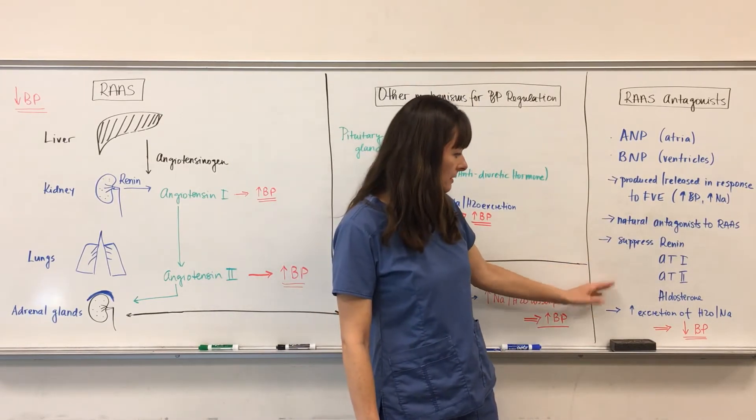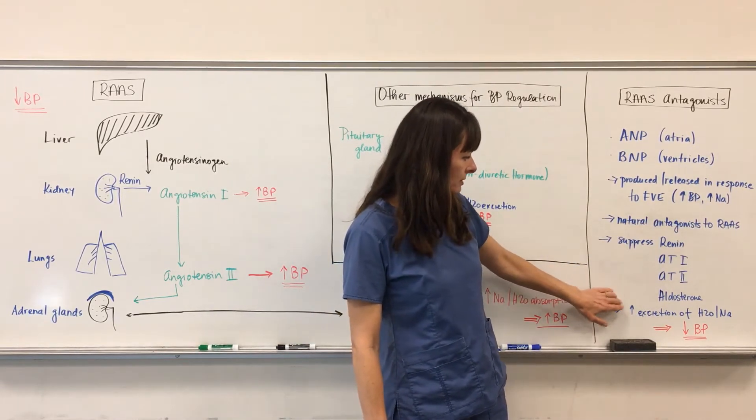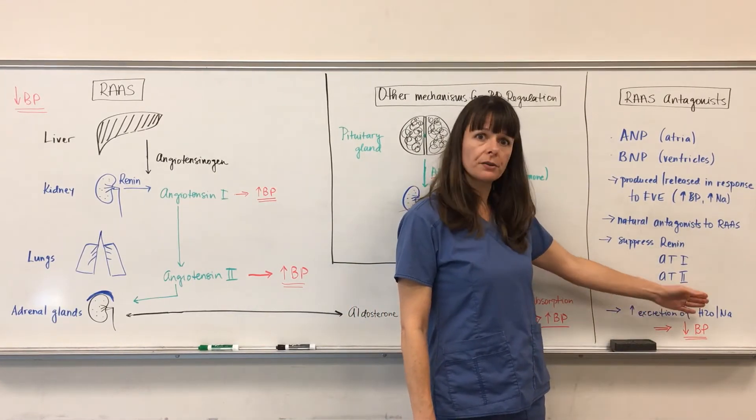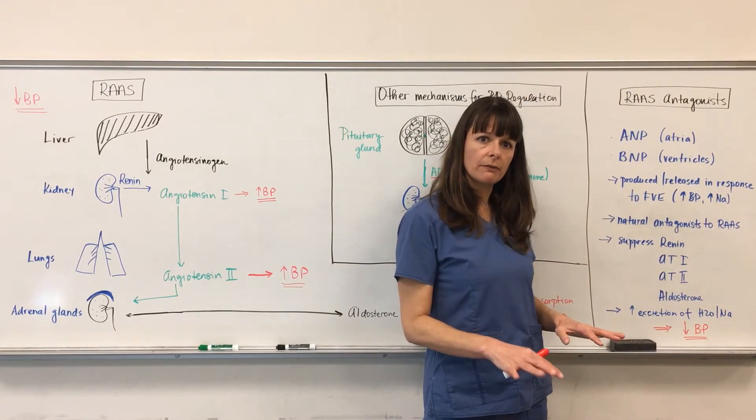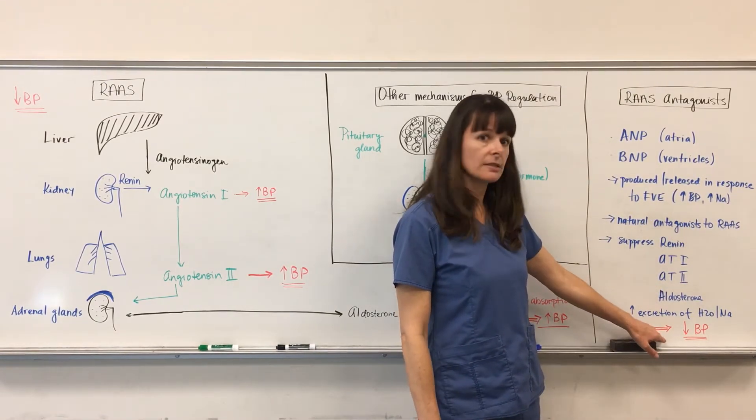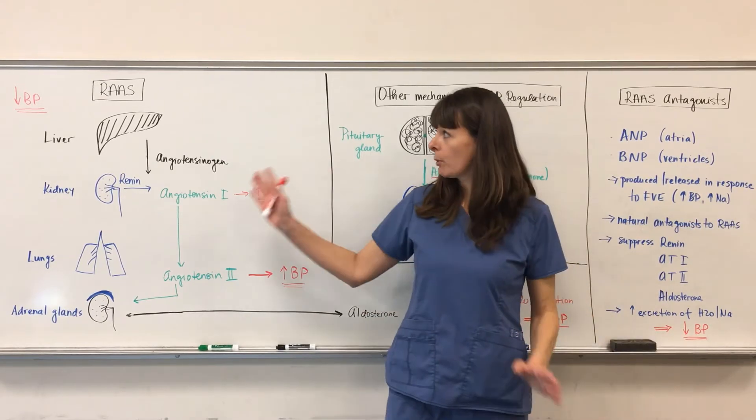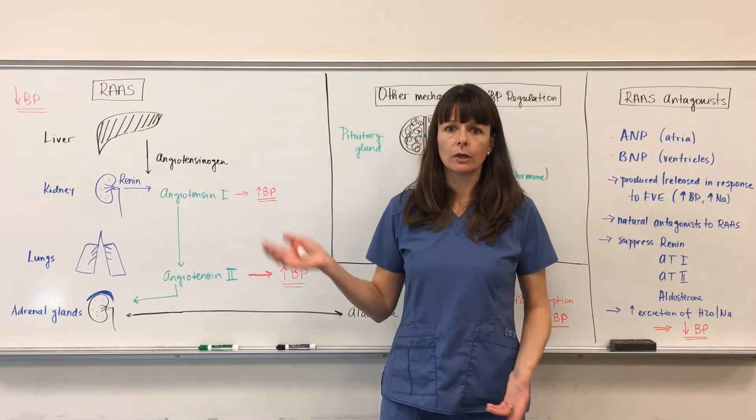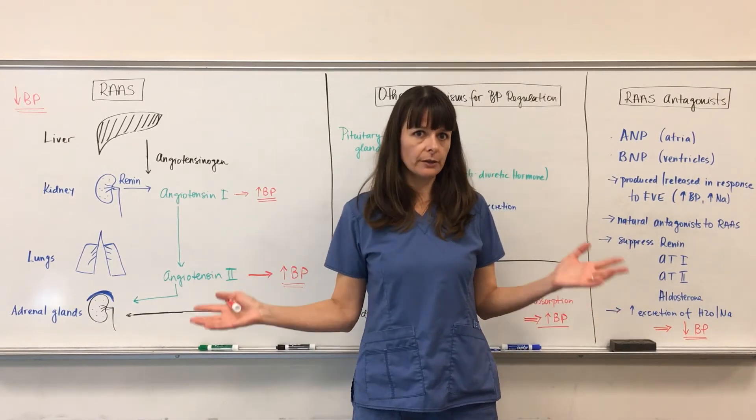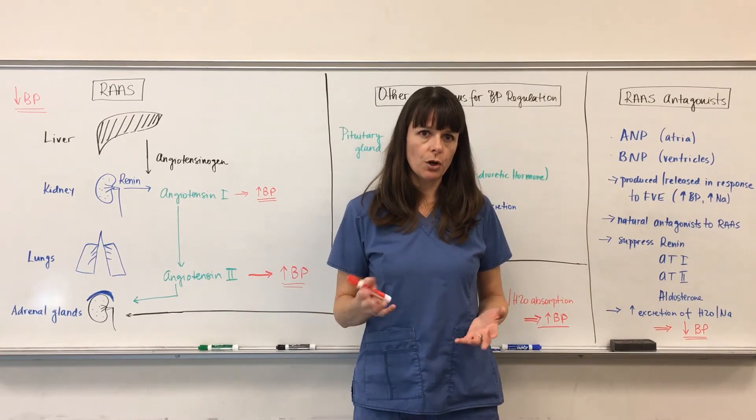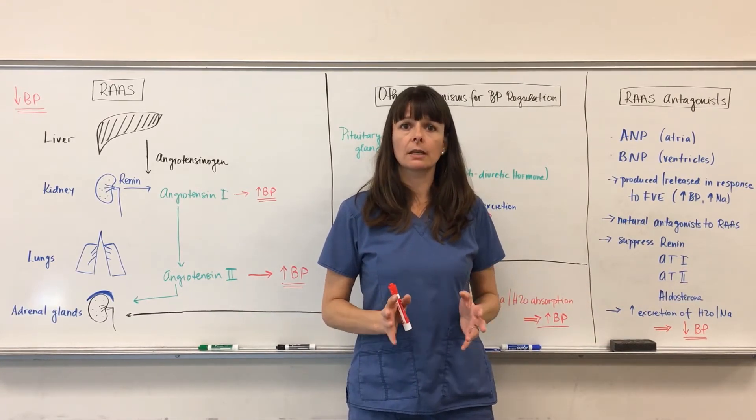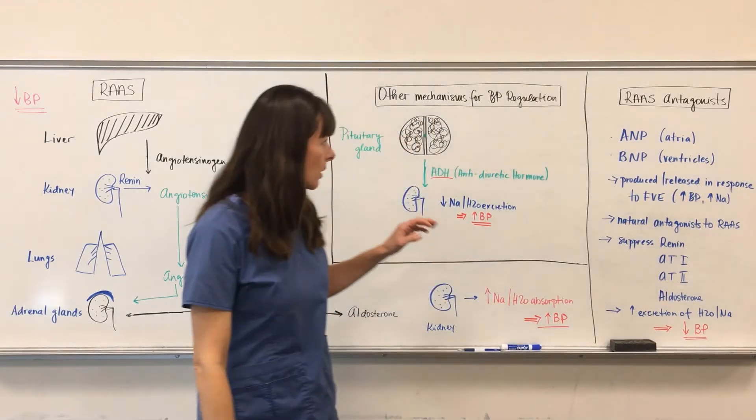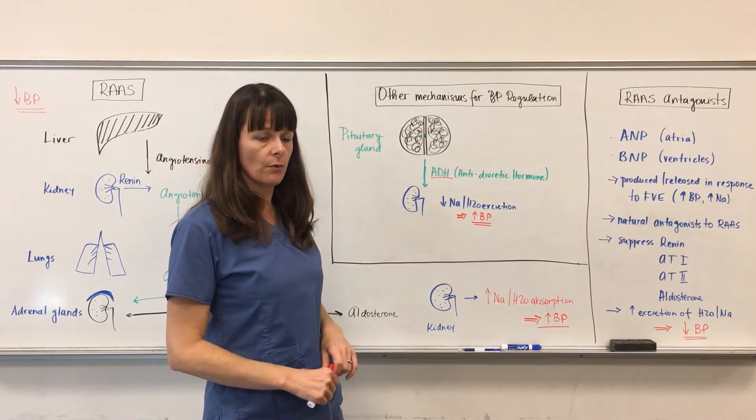And it does that, and then it increases the excretion of water and sodium, and therefore less water, less sodium in the system decreases the blood volume, therefore it decreases blood pressure. So a very important counteracting mechanism here. And in a normal healthy individual, these systems really work together to balance each other out. Important to note that the kidneys are basically the major regulators here of our fluid balance, as well as our pituitary gland that plays a role with the anti-diuretic hormone.